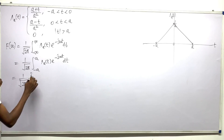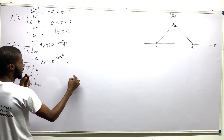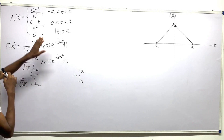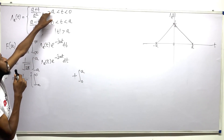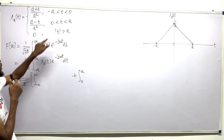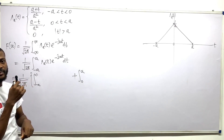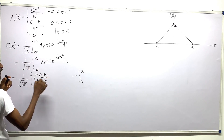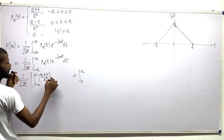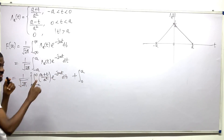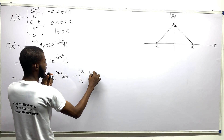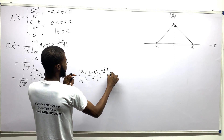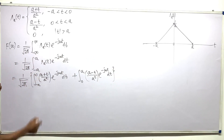This is (1/√(2π)), and now I split the integral according to how the equation presents itself: the integral from minus a to zero plus the integral from zero to a. The value from minus a to zero was (a + t)/a squared, and from zero to a it is (a − t)/a squared. Both multiplied by e to the negative j omega t dt.